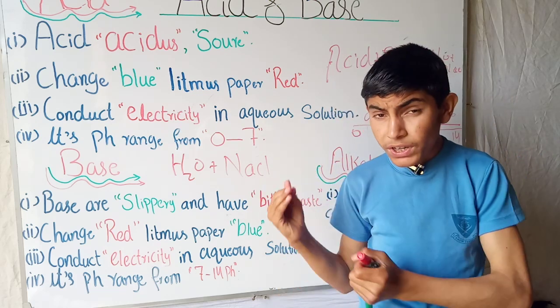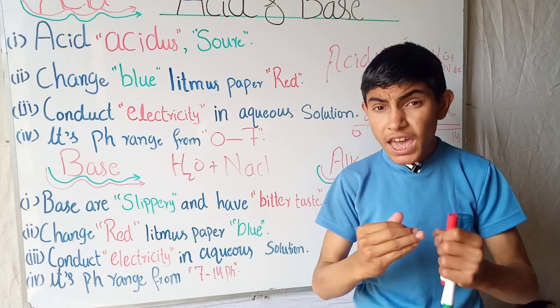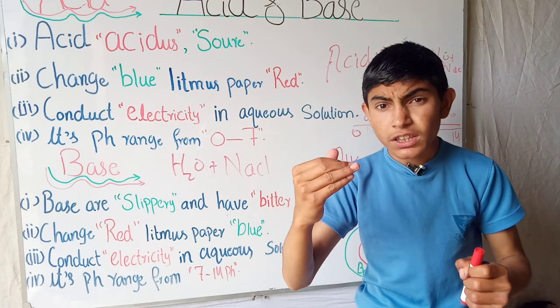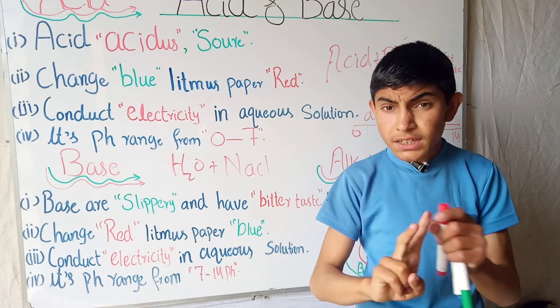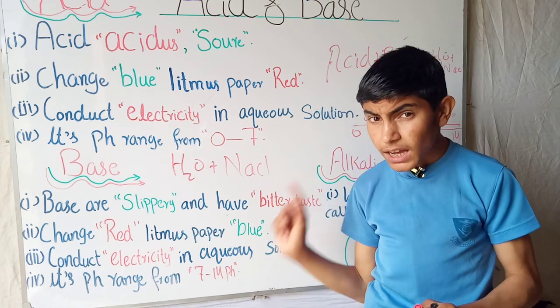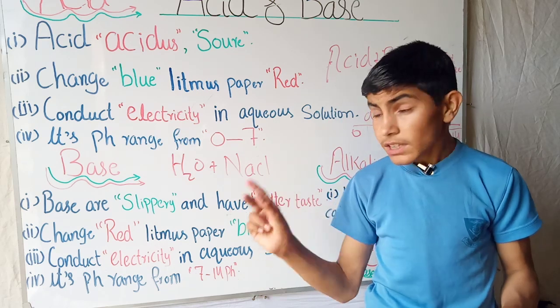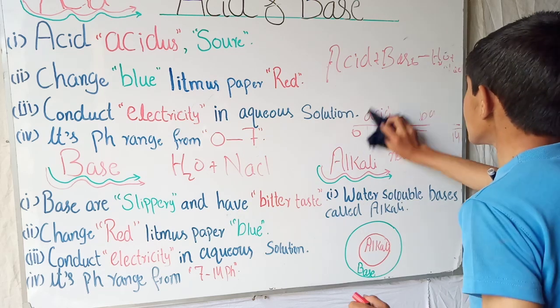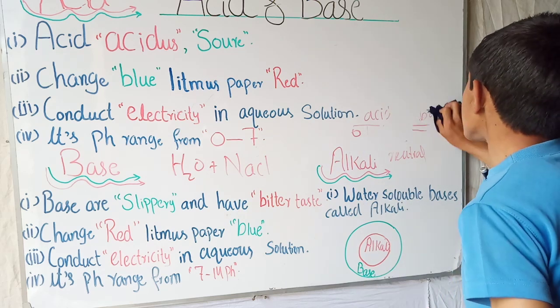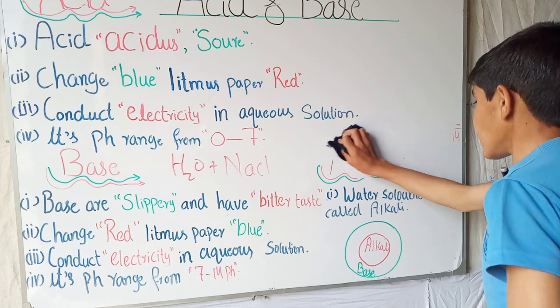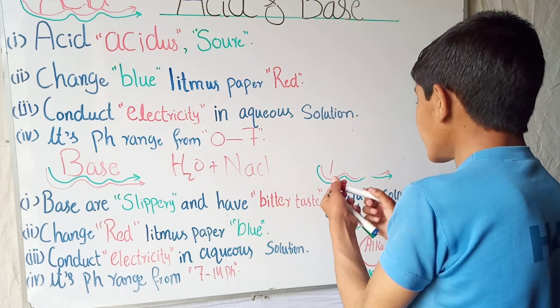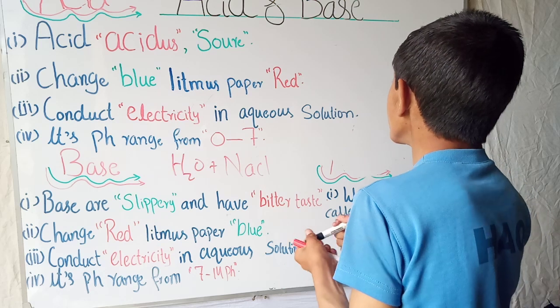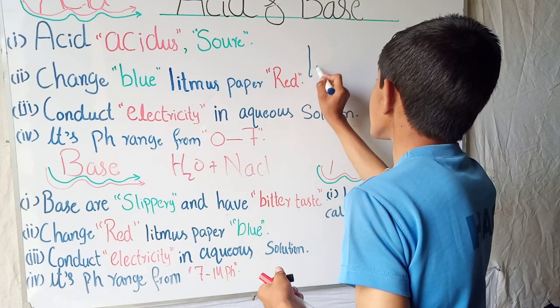When we add a strong acid and strong base, it gives us H2O plus NaCl. I will mention the strong acid and strong base are, like the preparation of salt.